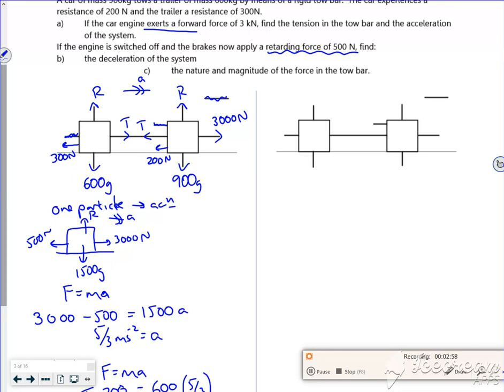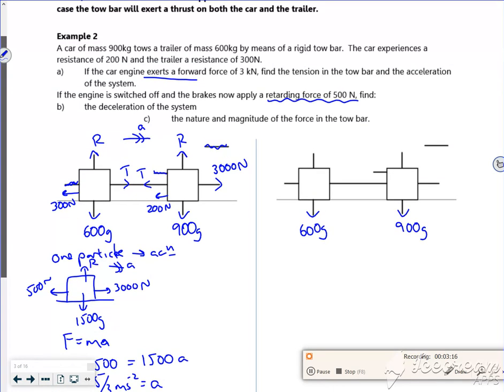Find the deceleration. Okay, so look at the whole system. Well, let's put some things in here then. So what have we got here? So we've got the 900g and 600g.